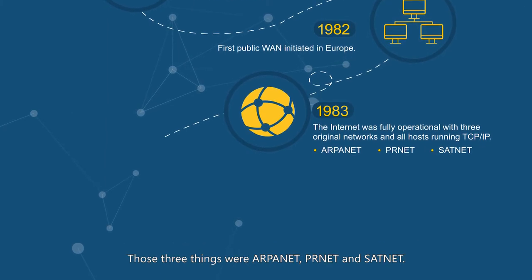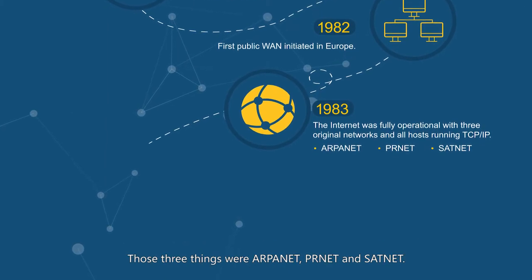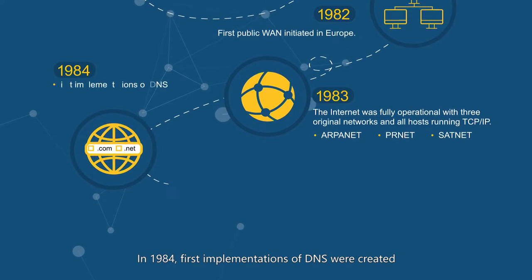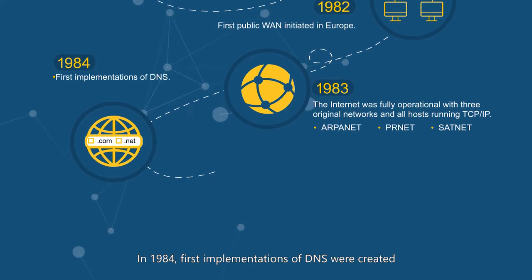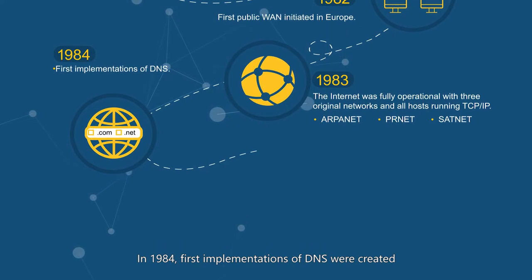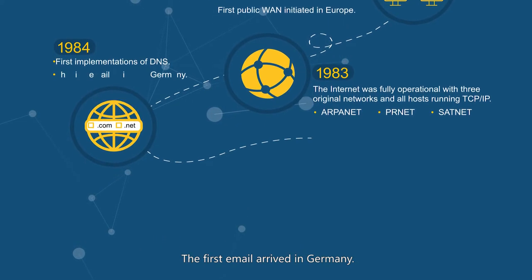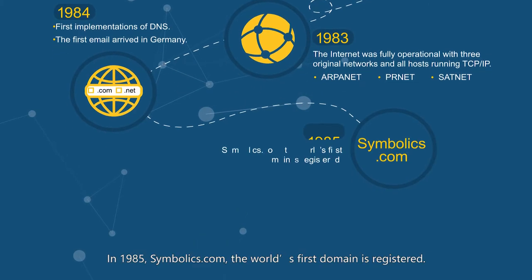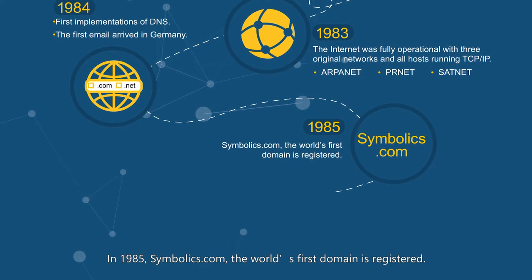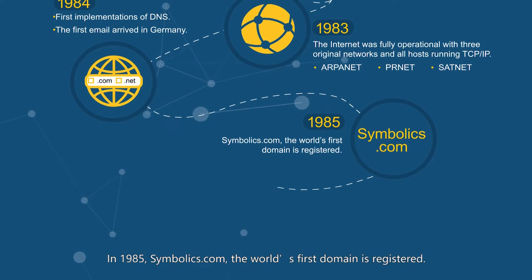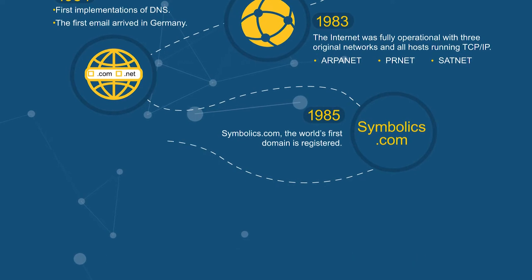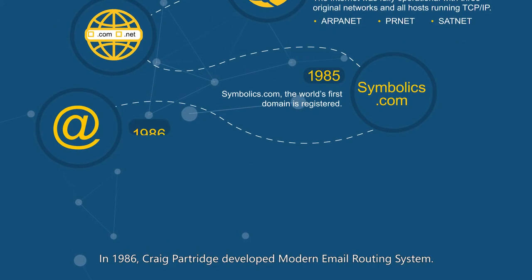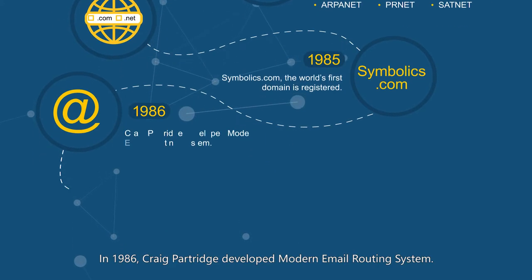Those three networks were ARPANET, PRNet, and SATNET. In 1984, the first implementations of DNS were created, and the first email arrived in Germany. In 1985, symbolics.com, the world's first domain, was registered.